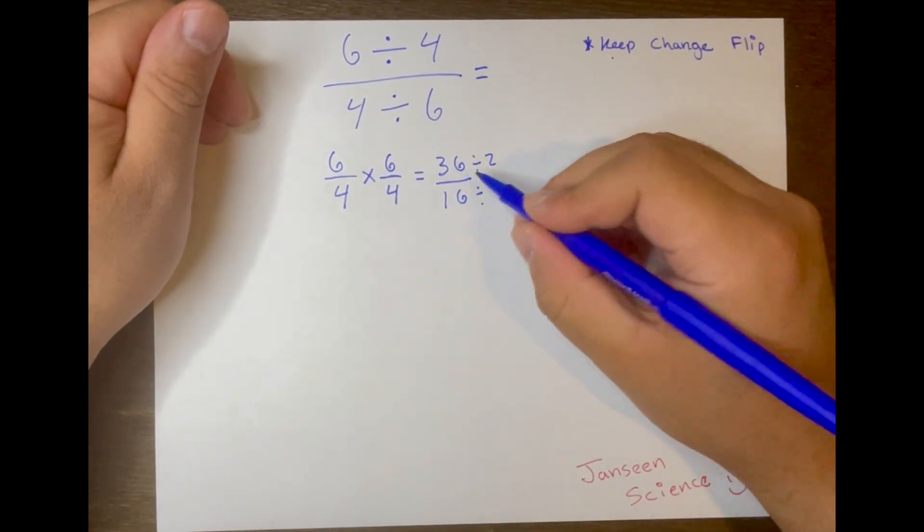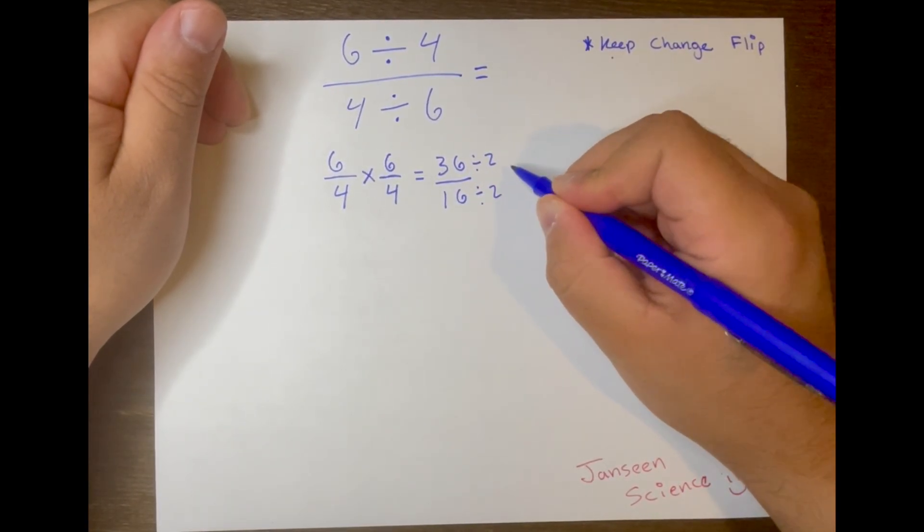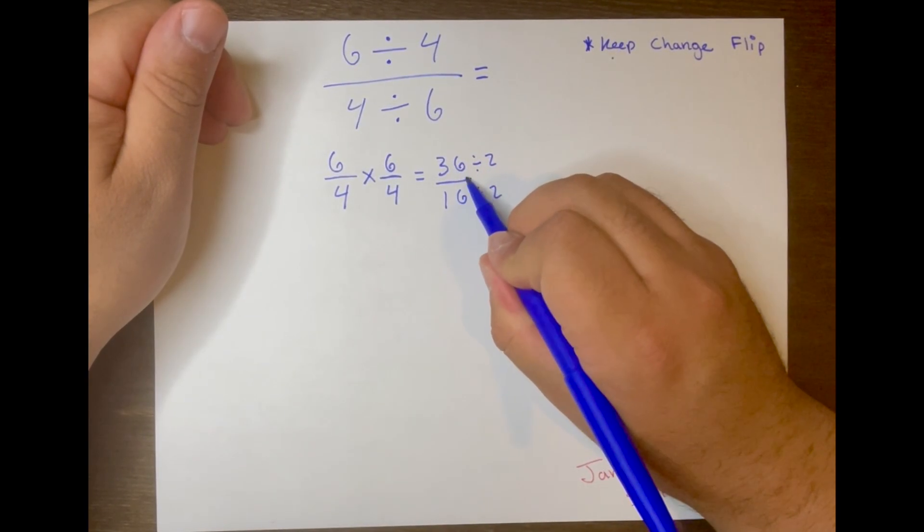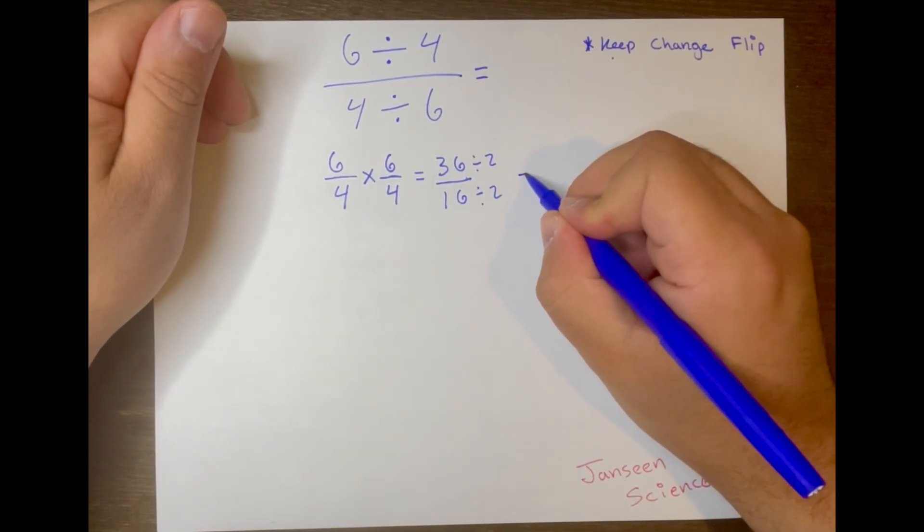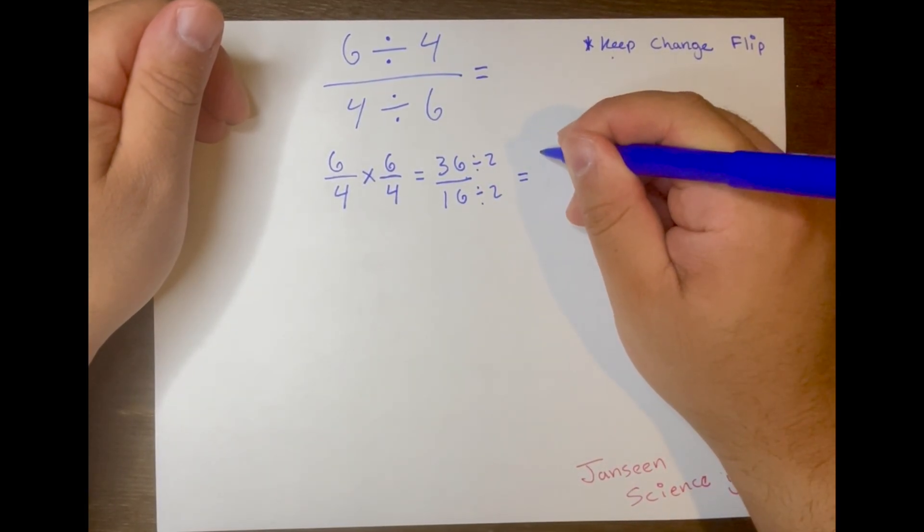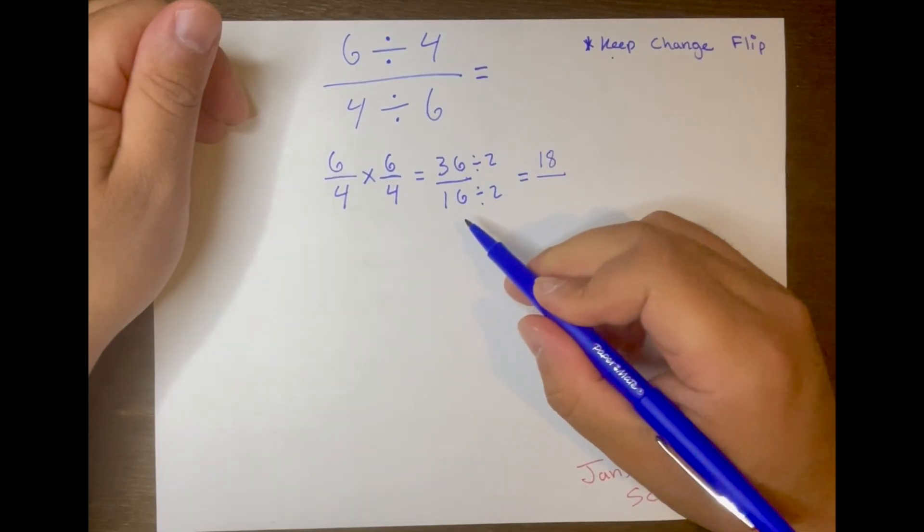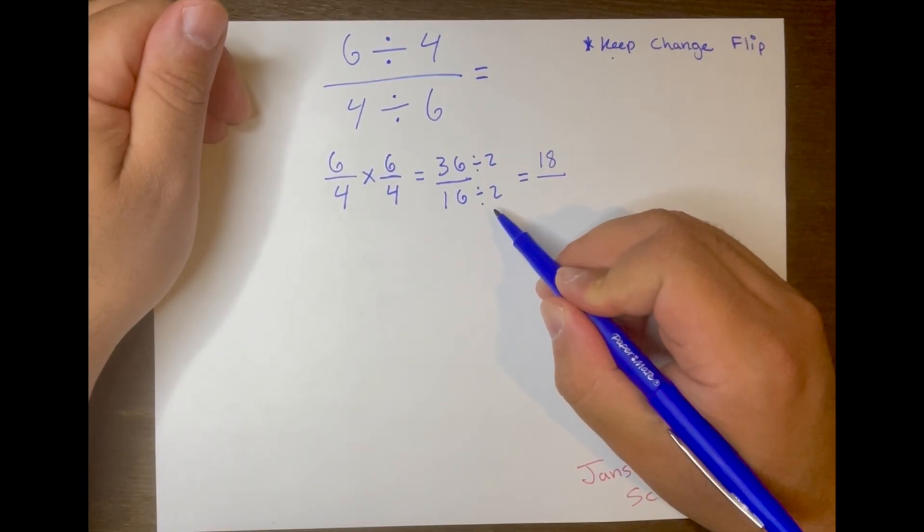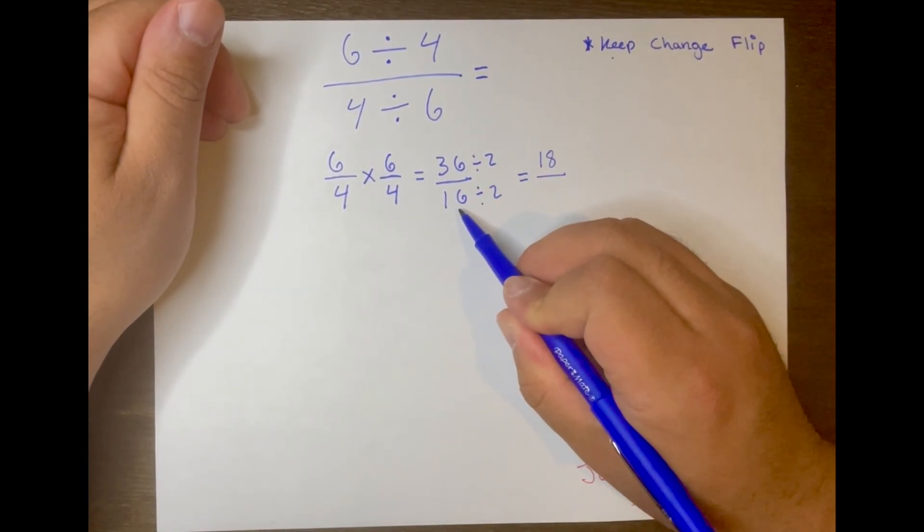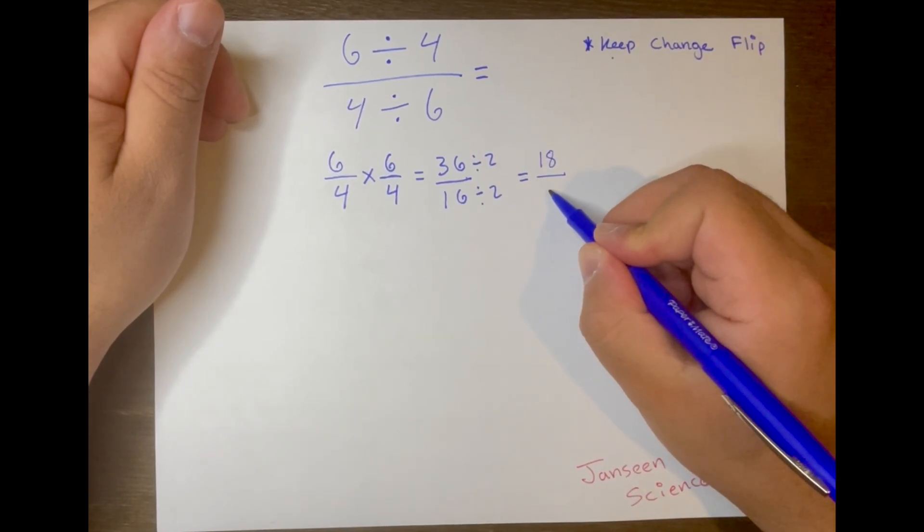We want to simplify 36 over 16. We're going to do it like this: 36 divided by 2 is 18, and 16 divided by 2 is 8.